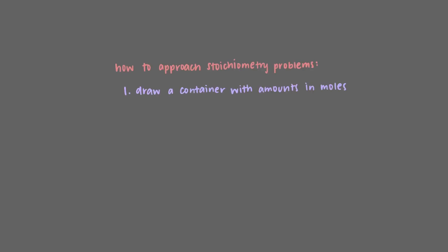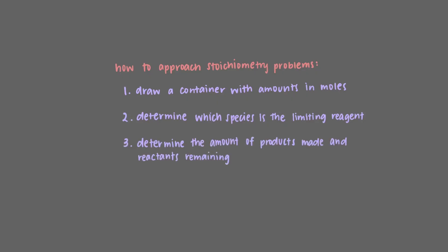Every stoichiometry problem will look exactly like this. We draw a container with moles, determine which of the reactants is limiting, and then determine the amount of products made and reactants remaining.